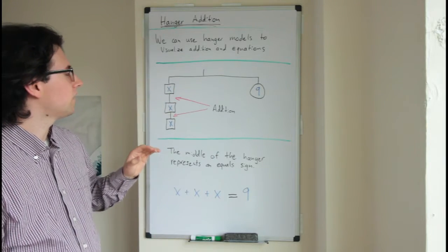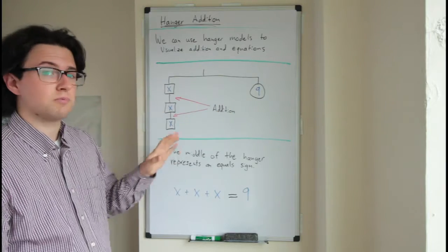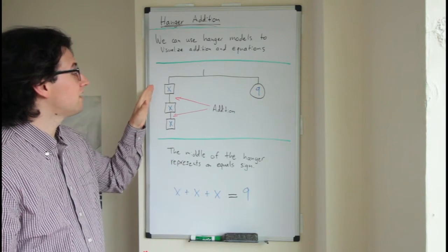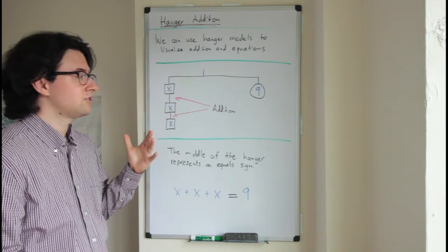Here's our hanger. On the left, we have different shapes to represent different values. I have three x's, and when they're connected by this line, I'm representing that as addition.